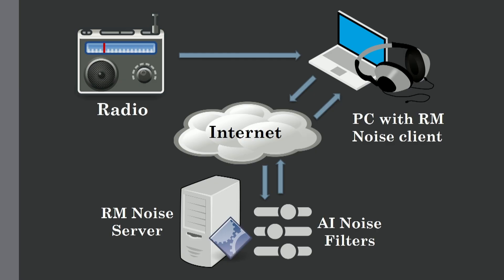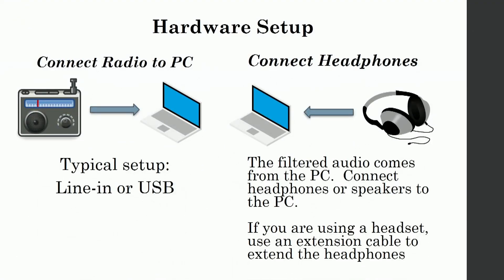Randy gave a very nice description of how the system works. He takes a signal from the radio and runs it to the computer and then the internet. It goes from the internet to his RM Noise server, where he applies the AI noise filters, and then of course it feeds the signal back. The setup requires connecting via USB or line-in from your receiver to the computer, and from the computer it runs all the processing. The cleaned audio comes back through your headphones — or presumably stereo speakers as well.